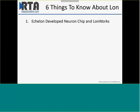There are six things you need to know about LonWorks. First, Echelon developed the neuron chip, and every LonWorks device has one. The neuron chip is the MAC — the Media Access Controller — the part of the hardware that decides when to put the next bit onto the network. It's a very sophisticated piece of hardware with three communications processors working together.